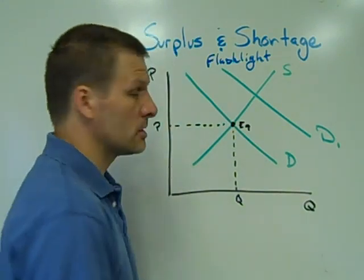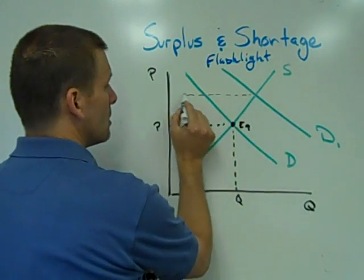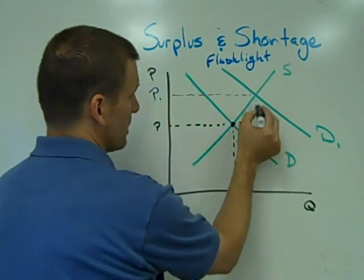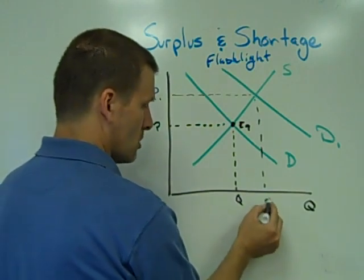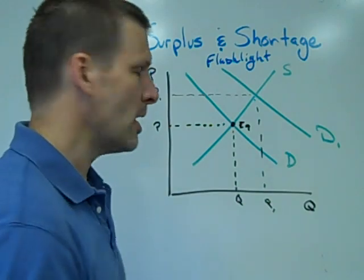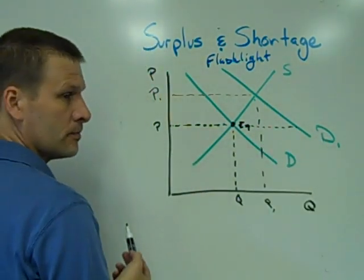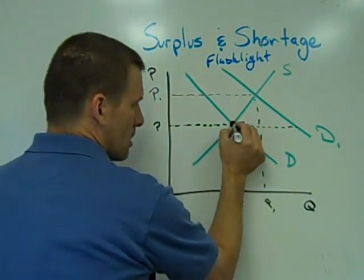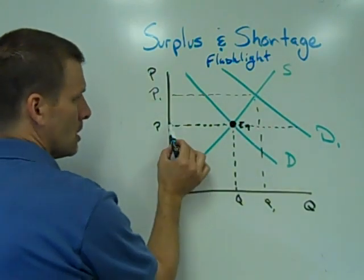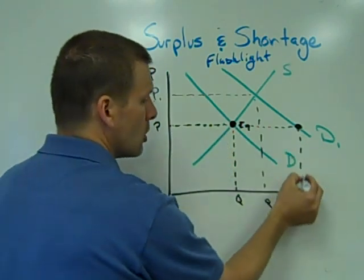Now, we know based on our analysis that what should happen in the absence of any interference is that the market price should automatically float up from P to P1, and the market quantity should automatically increase from Q to Q1. But what happens — remember my initial assumption — if the supermarket doesn't adjust their prices? If the price remains at P, then that price intersects our supply at Q, but it now intersects our new demand curve D1 at a point I'll call Q2.